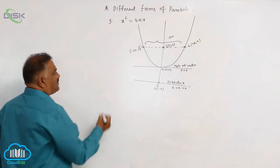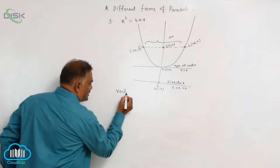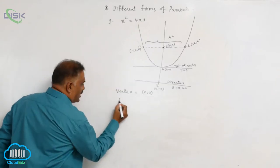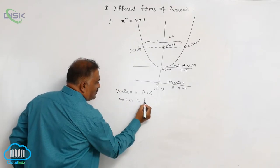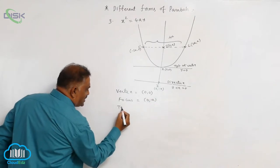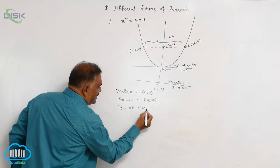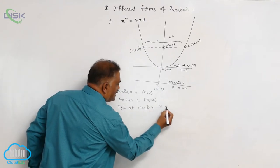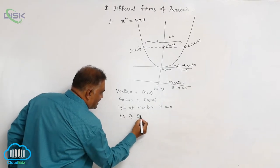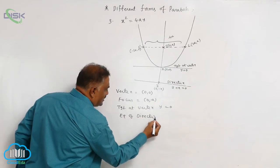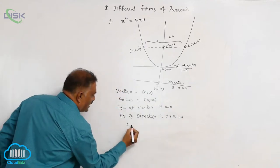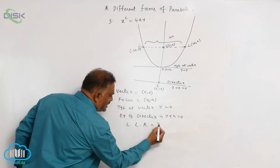Listing all the properties: vertex = (0, 0), focus = (0, a), tangent at vertex is y = 0, and the equation of the directrix is y + a = 0.